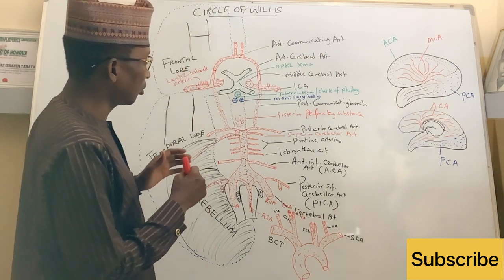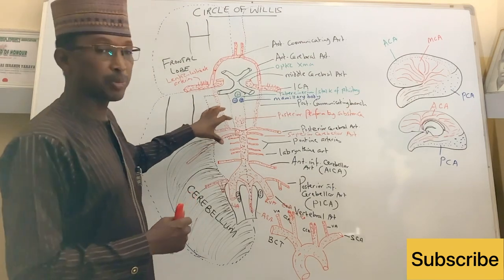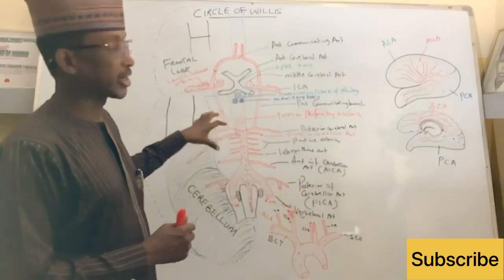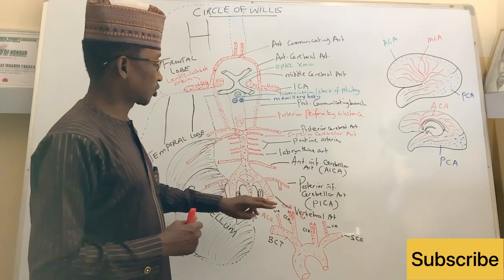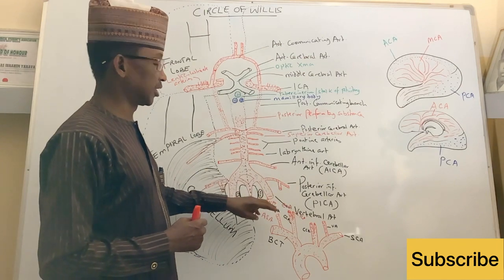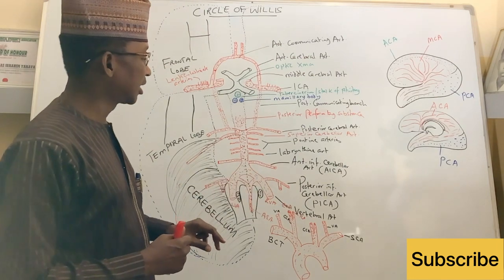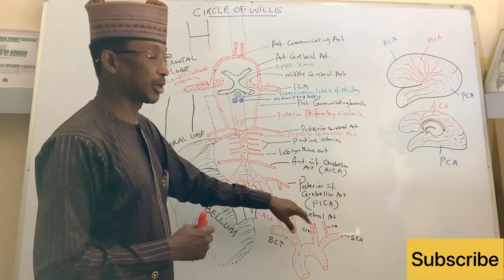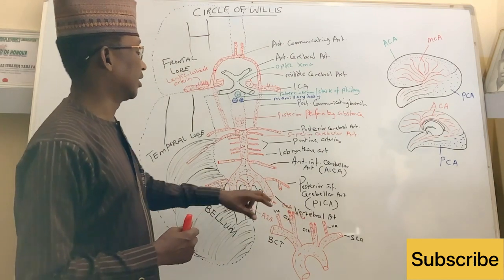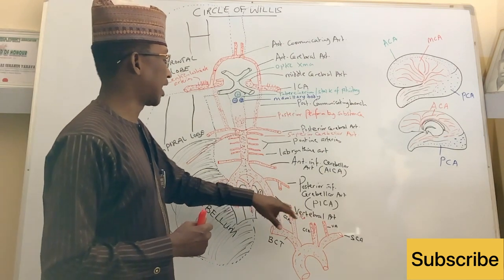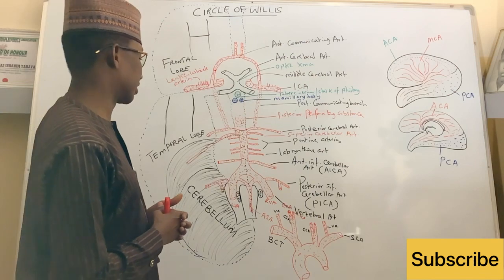So the blood supply to the brain comes from two sources: the first source is the two vertebral arteries coming from the subclavian arteries, and the internal carotid arteries coming from the two common carotid arteries.